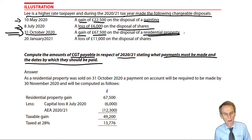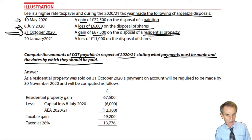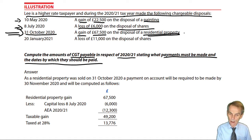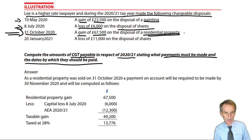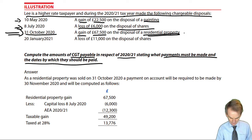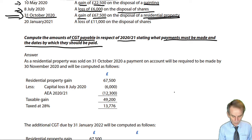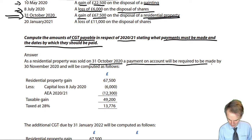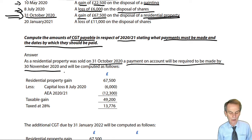Therefore we must compute the payment on account due and state when it will have to be paid, as well as computing when the final CGT liability will have to be paid — that'll be 31st of January 2022. The residential property was sold on the 31st of October, so a payment on account is required within 30 days — by the 30th of November 2020 — computed as follows.